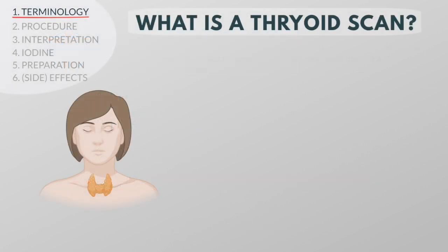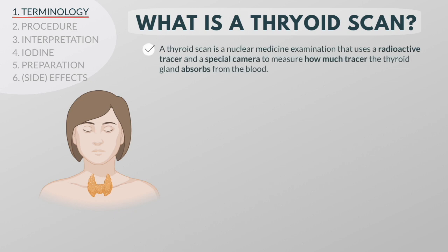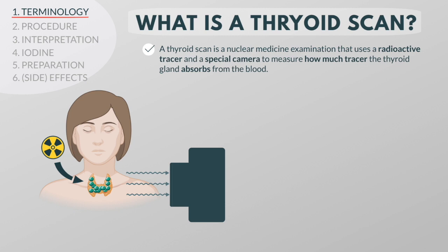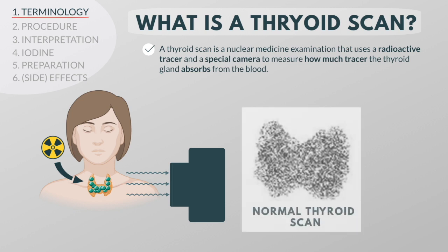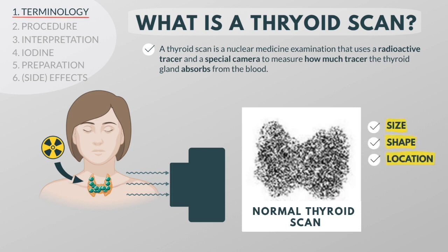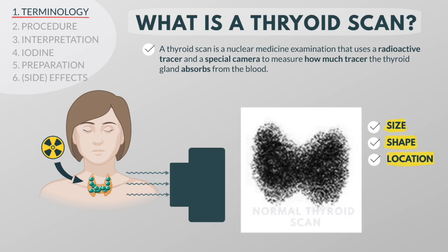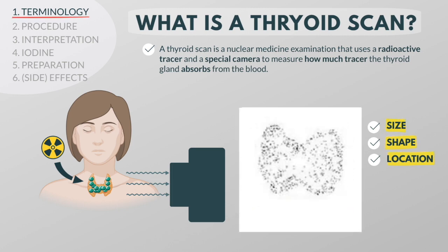A thyroid scan is a nuclear medicine examination that uses a radioactive tracer and a special camera to measure how much tracer the thyroid gland absorbs from the blood. A thyroid scan shows the size, shape, and location of the thyroid gland. It can also find areas of the thyroid gland that are overactive or underactive.